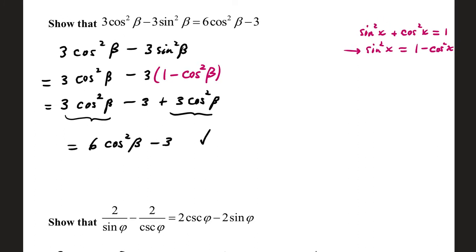Show that 3cos²β - 3sin²β = 6cos²β - 3. The left side looks harder, so start there: 3cos²β - 3sin²β. The right side has no sine term, so use a Pythagorean identity to replace sin²β. After the direct trade and distributing -3, we get 3cos²β - 3 + 3cos²β. Combining like terms gives 6cos²β - 3, which is our destination.